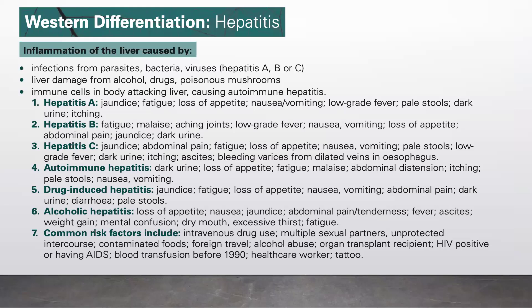Autoimmune hepatitis will present with dark urine, loss of appetite, fatigue, malaise, abdominal distension, itching, and pale stools.